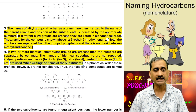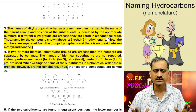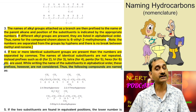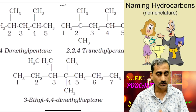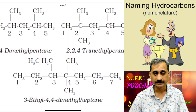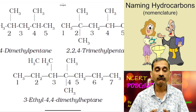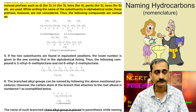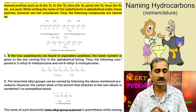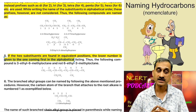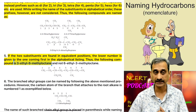While writing the names of substituents in alphabetical order, these multiplying prefixes are not considered. Thus the following compounds are named: 2,4-dimethylpentane; 2,2,4-trimethylpentane; 3-ethyl-4,4-dimethylheptane. If two substituents are found in equivalent positions, the lower number is given to the one coming first in the alphabetical listing. Thus the following compound is 3-ethyl-6-methyloctane and not 6-ethyl-3-methyloctane.